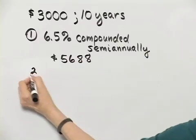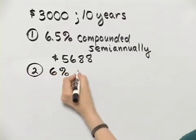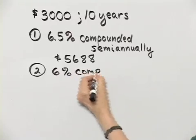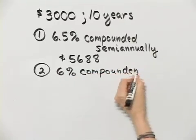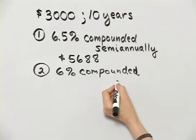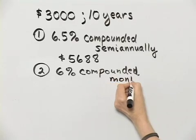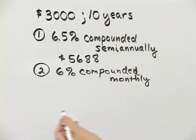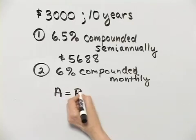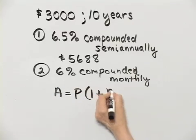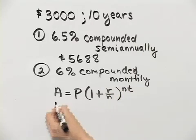Now what was option two? Option two was 6%, and it was compounded monthly. So here's our formula again: A equals P times one plus R over N to the NT power. We still have a principal of 3,000.